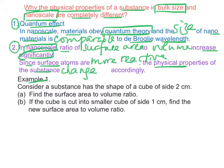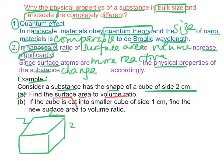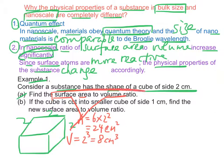For example, example one: consider a substance has a shape of a cube of side 2 cm. Part a: find the surface area to volume ratio. The surface area A equals 6 times 2 squared equals 24 cm squared. The volume V equals 2 cubed equals 8 cm cubed. Therefore the surface area to volume ratio A over V equals 24 over 8 which is 3.